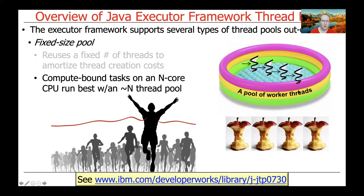You could have N+1 or N−1 threads, but N is probably the best choice. Compute-bound computations are never going to block on I/O, so you won't benefit from having more threads than cores — they'd just have to wait their turn. We typically think of these compute-bound tasks as run-to-completion tasks: you start processing and keep going until you're done.